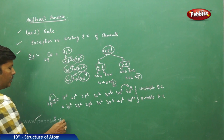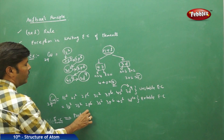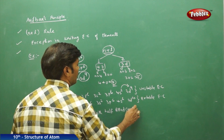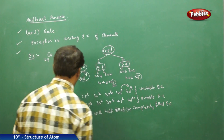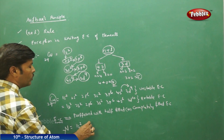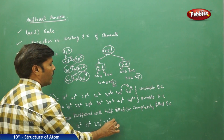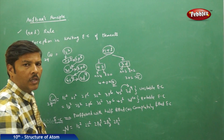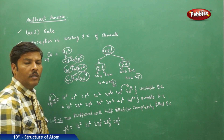Always remember: when writing the electronic configuration for any element, the preferred configuration is either half-filled or completely filled. For example, nitrogen has atomic number 7, with configuration 1s2 2s2 2px1 2py1 2pz1. You can see that the 2p subshell is half-filled, which is why nitrogen's electronic configuration is said to be more stable.